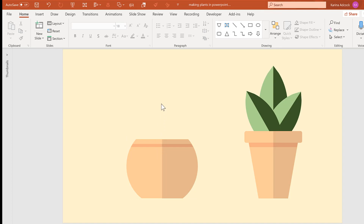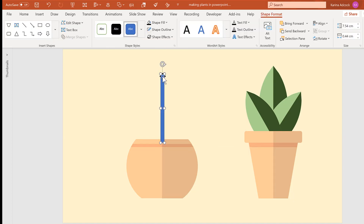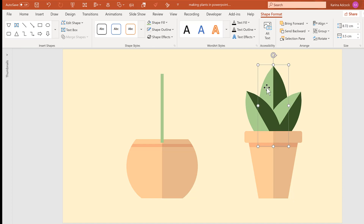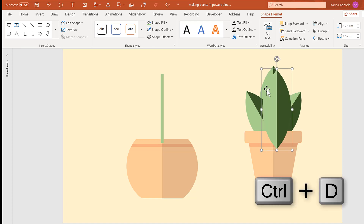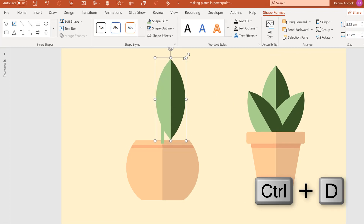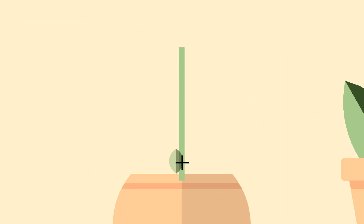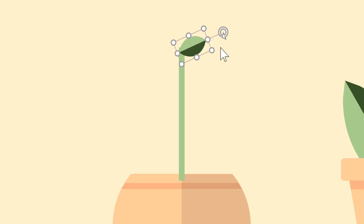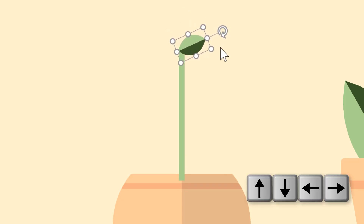Now I'm going to make a stem for my plant. Select a rectangle and draw a thin rectangle down the middle of the shape. Remove the shape outline and change the shape fill to a light green color — I'm going to make this a little skinnier. Then select one of the leaves, press Ctrl+D to duplicate it, move it over here, make it smaller, rotate it round, and line it up with the stem using the arrow keys.